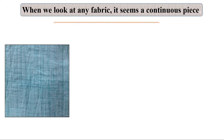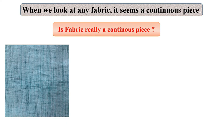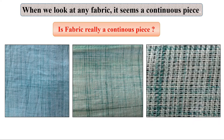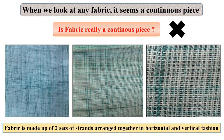Whenever we look at any fabric, it seems like a continuous piece. But is fabric really a continuous piece? Take a closer look at any fabric piece in your house — for even more understanding, try taking pictures of a fabric piece by zooming your camera. You will observe that while from a distance fabric seems like a continuous piece, it actually is not. As you observe it more closely, you will notice that fabric is made up of two sets of strands arranged together in horizontal and vertical fashion.